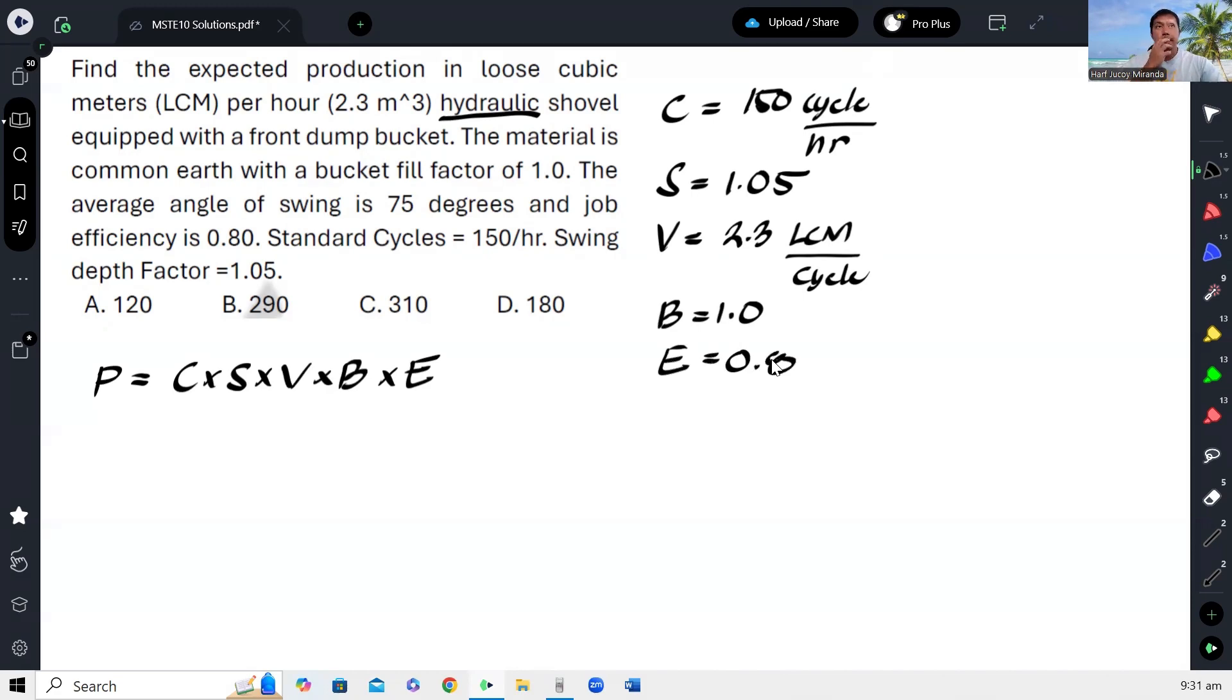So for this item, it's all about direct substitution. C is 150 cycle per hour, S is 1.05, V is 2.3 loose cubic meter per cycle, B is 1, and E is 0.8.